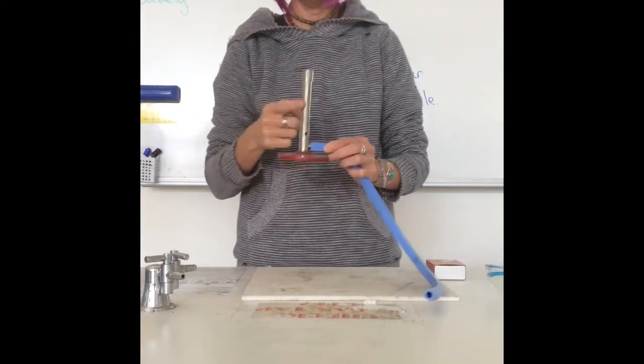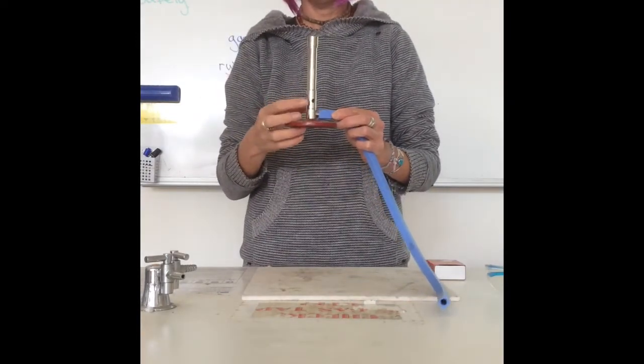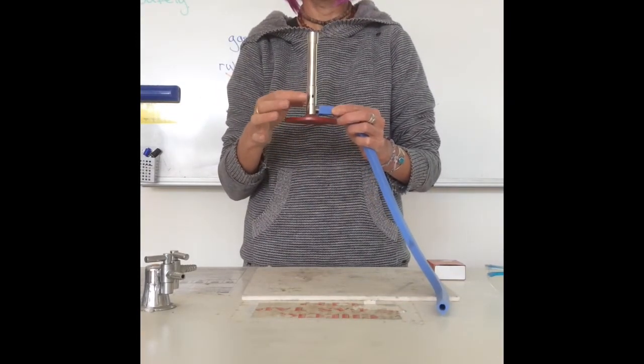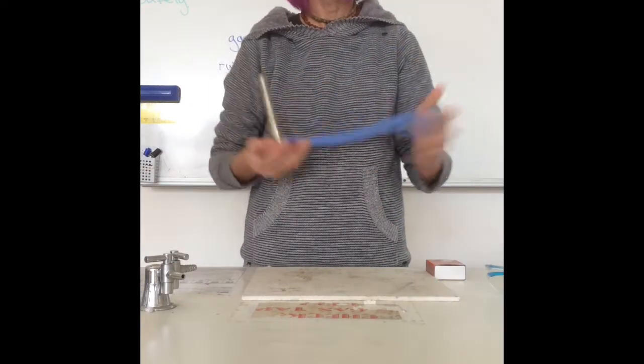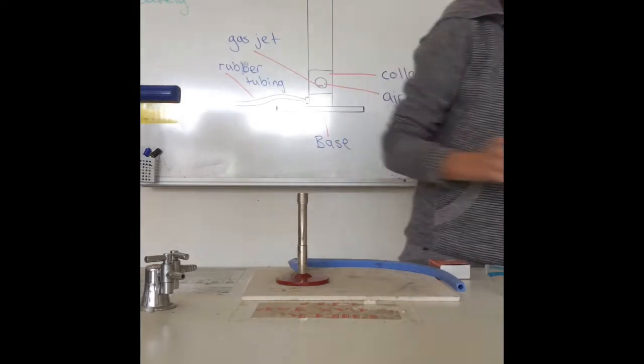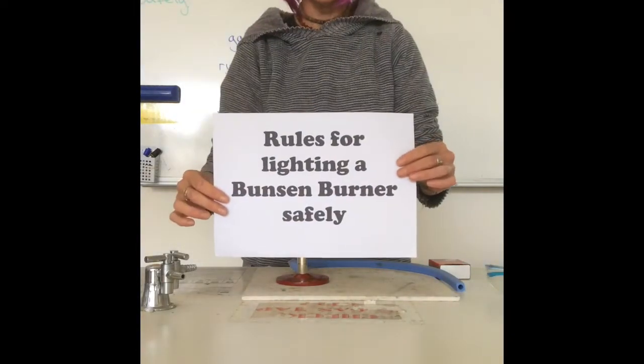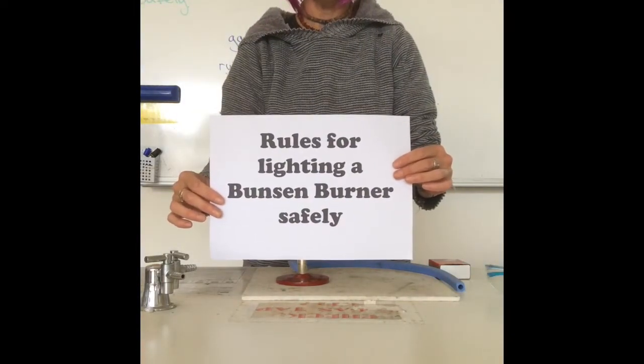So that's the parts of the Bunsen burner. We have the barrel, the collar, the air hole, the gas jet, the base, and the rubber tubing. The next part of the video, I'm going to show you how to light a Bunsen burner correctly.